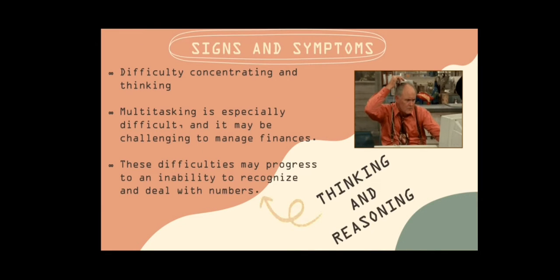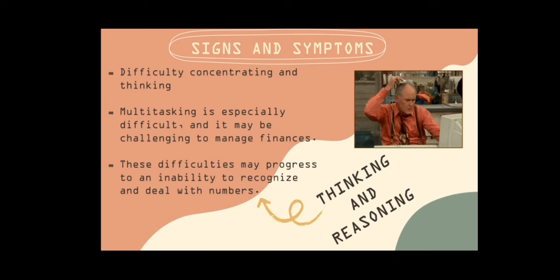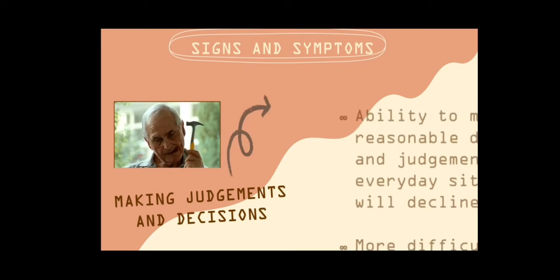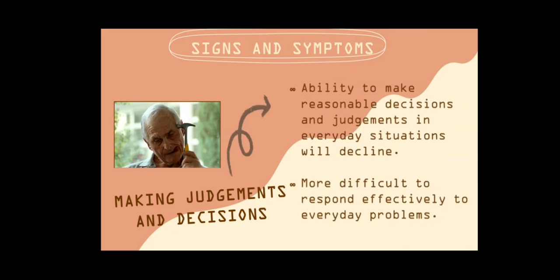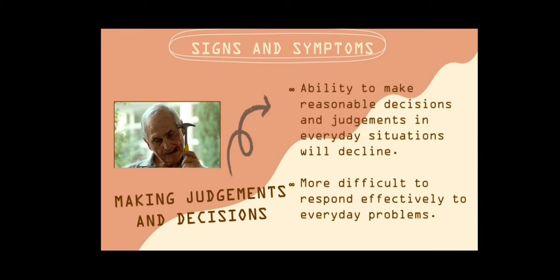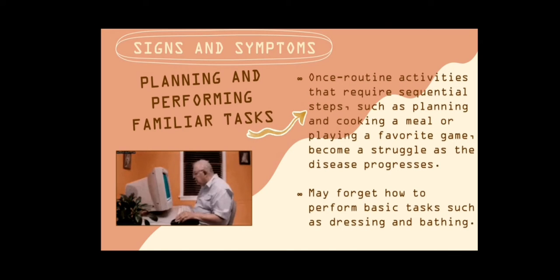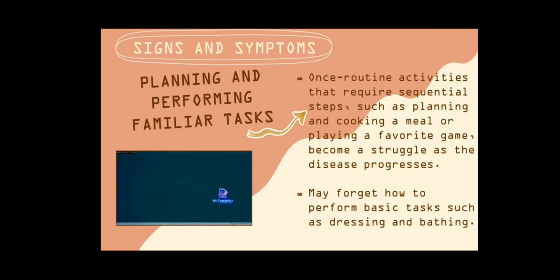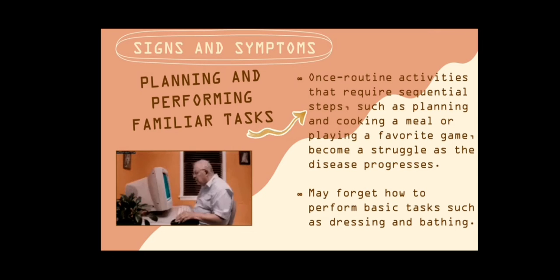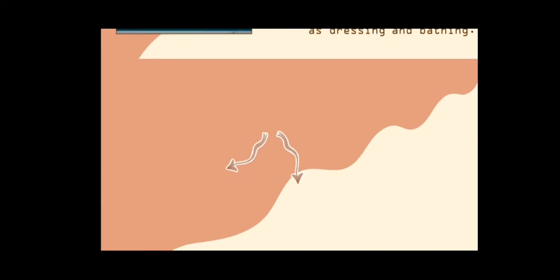Difficulty concentrating and thinking. Multitasking is especially difficult, and it may be challenging to manage finances. These difficulties may progress to an inability to recognize and deal with numbers. The ability to make reasonable decisions and judgments in everyday situations will decline. Routine activities that require sequential steps, such as planning and cooking a meal, become a struggle as the disease progresses.